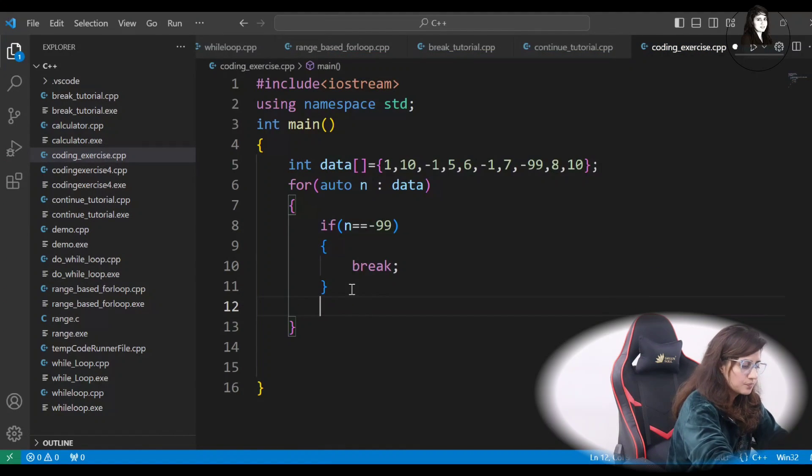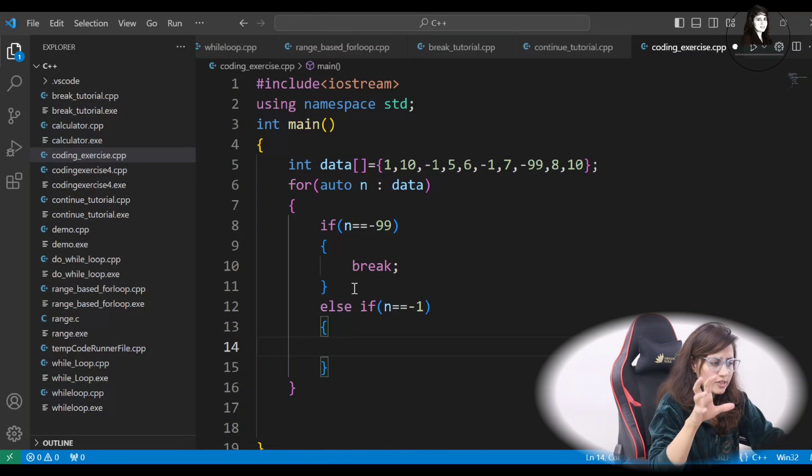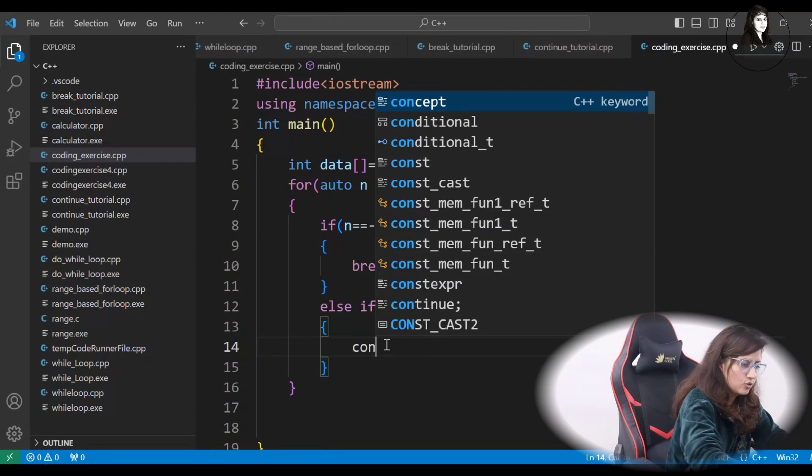Now, next is, else if this N equal to equal to minus 1, then you don't have to stop, you just have to skip that iteration. Means, we don't want to print this minus 1, but after that, you want to print 5, 6. So, we will use continue.